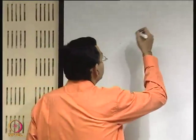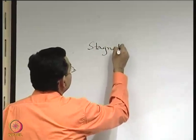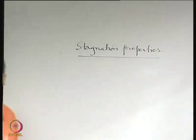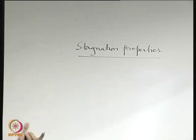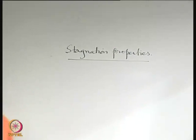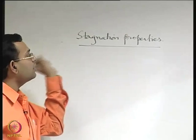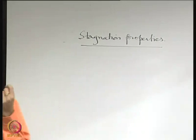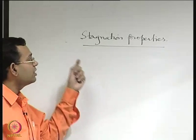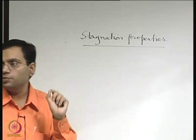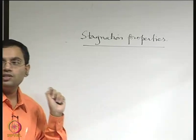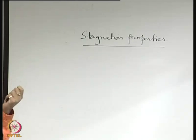We will continue with our discussions on compressible flows and now discuss something known as stagnation properties. This term stagnation we have come across during earlier topics in fluid mechanics — one of the literal meanings is that the fluid is brought to rest at a point so that the velocity is zero. A stagnation point is a point where the velocity of flow is zero, but that does not suffice the full description of stagnation properties. We will now look more deeply into the important properties which dictate the nature of the process by which the stagnation state is achieved.